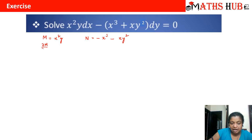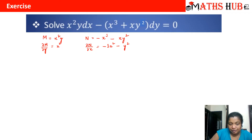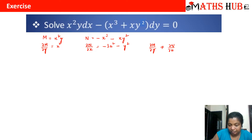So ∂M/∂y = x² and ∂N/∂x = -3x² - y². You can clearly see that ∂M/∂y is not equal to ∂N/∂x, so we need to calculate an integrating factor.